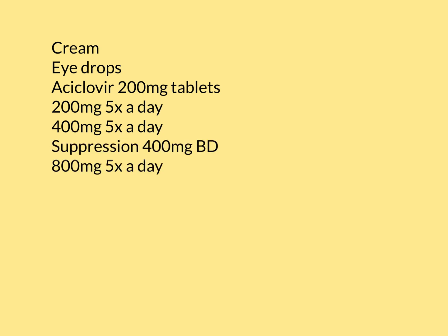In terms of how long these treatment courses last, it's usually between five to ten days, judged depending on the severity of the infection. For a quite small skin infection from herpes, you might give 200 milligrams five times a day for five days. Whereas for a really extensive herpetic skin infection, you might go more intensively with 400 milligrams five times a day for ten days.